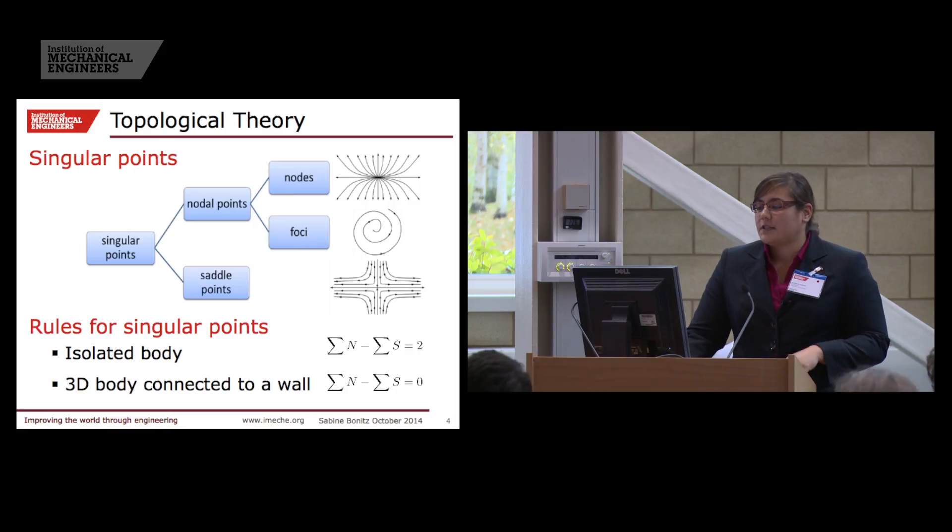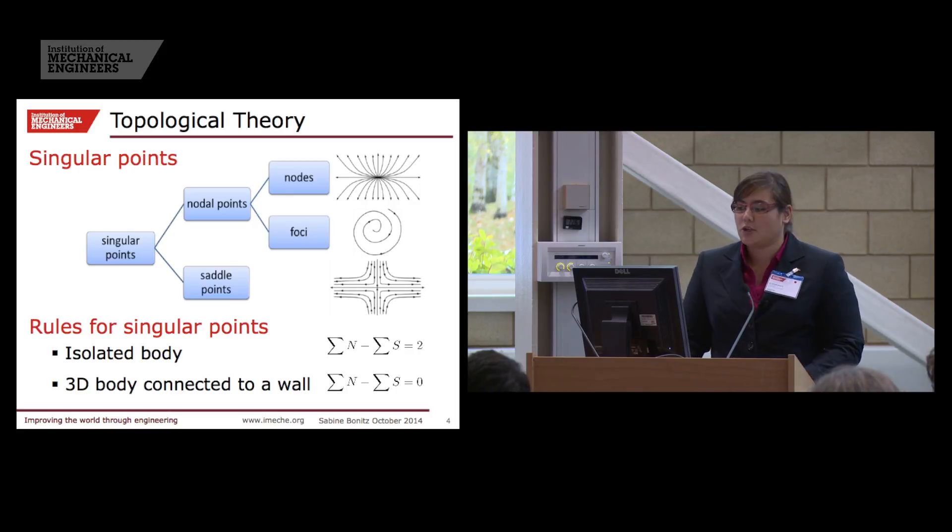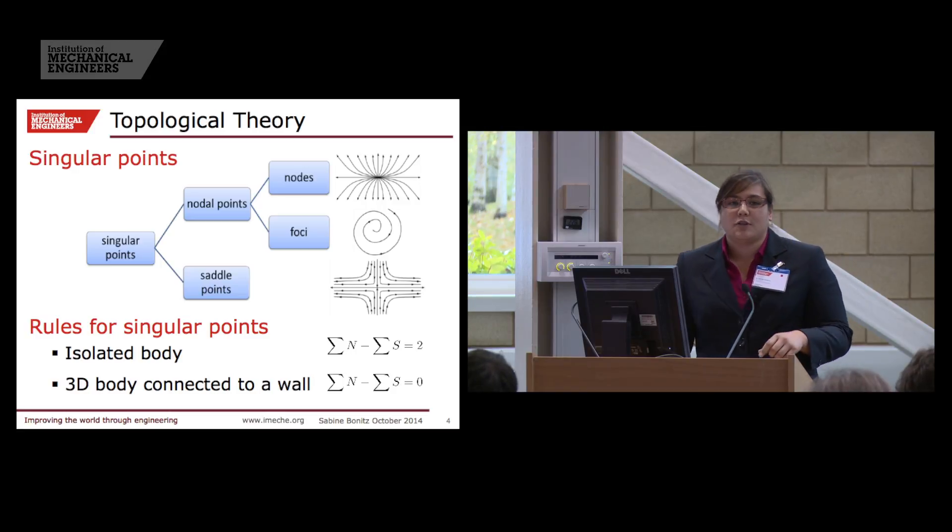We can find three different types of critical points. They are divided into nodes, which are points where either all streamlines emanate or meet on that point. We can find focus, which are swirling structures. And we have saddle points where two streamlines meet and two streamlines leave from that point.